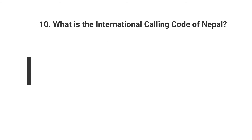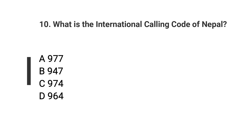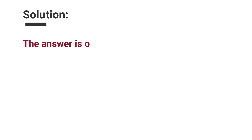Question number ten: What is the international calling code of Nepal? Options are A. 977, B. 947, C. 974, D. 964. The answer is option A, 977.